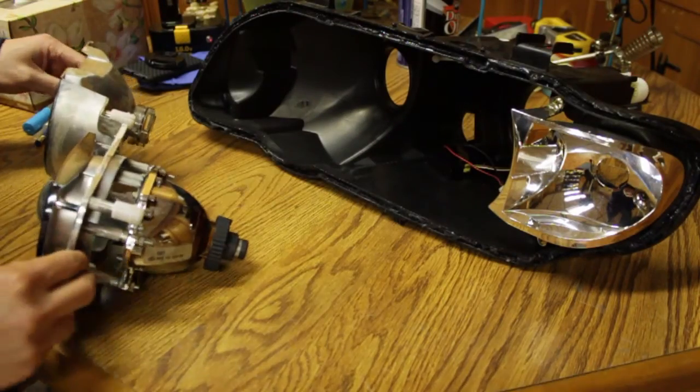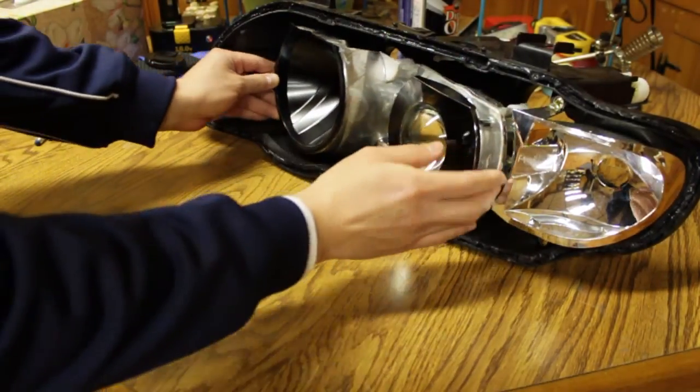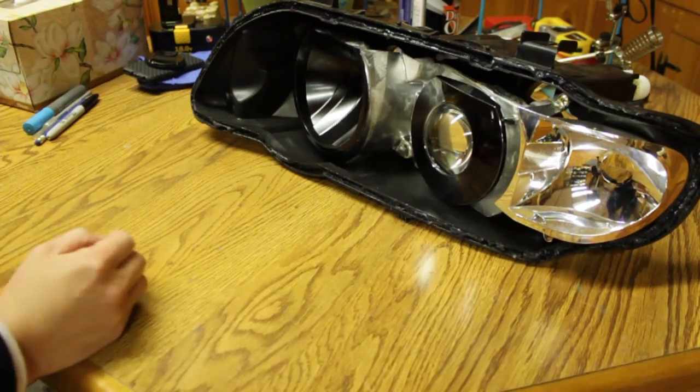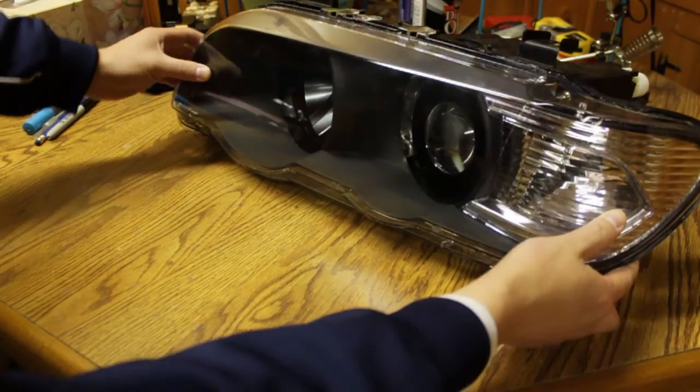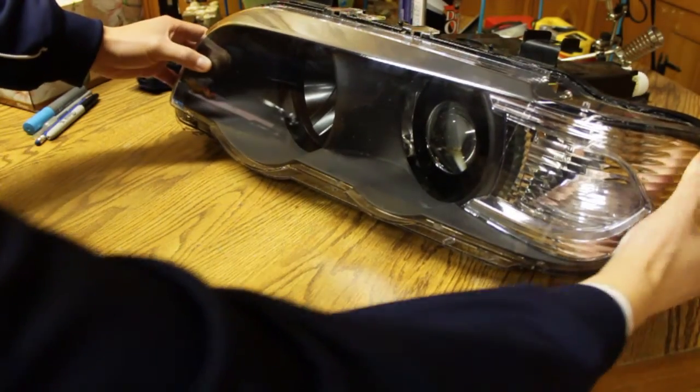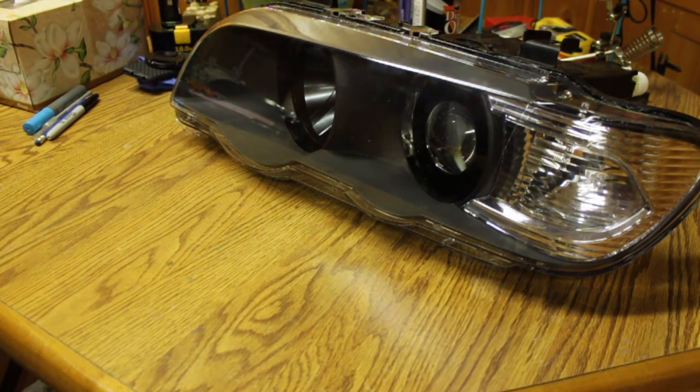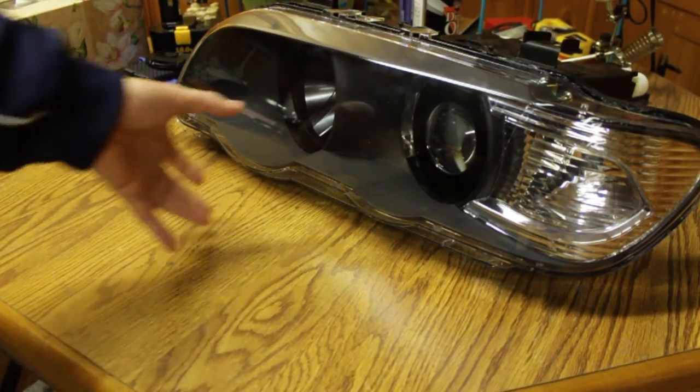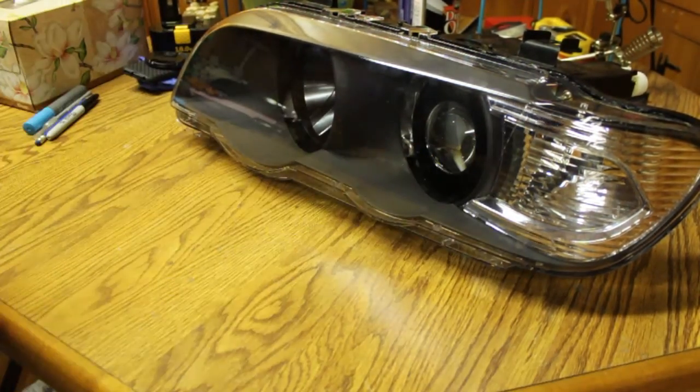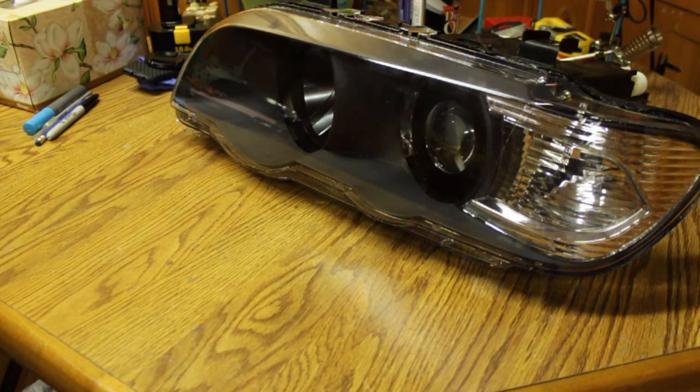Once that's all done, you just reassemble, pop everything back into its place just like that. And then you bake it at another 250 degrees for 10 minutes to get your glue nice and soft, and then you just push that lens back on completely.